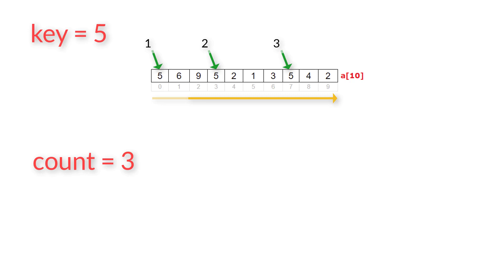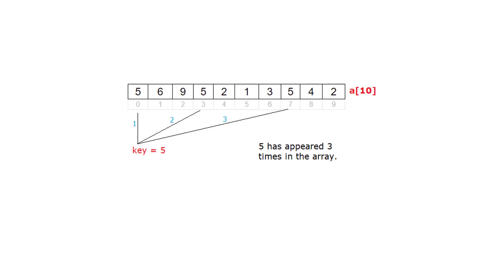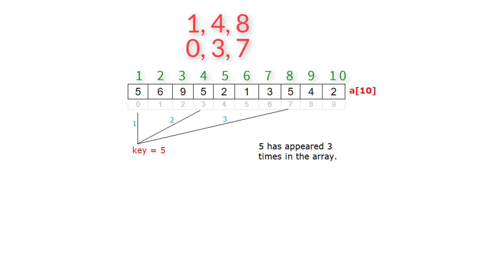We could even display the position at which this key has appeared. At positions a[0], a[3], and a[7], 5 is present. But users are not used to counting from 0, so we increment the index by 1. That means the element 5 has appeared at positions 1, 4, and 8.